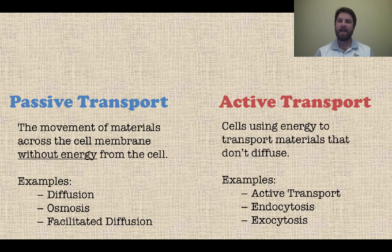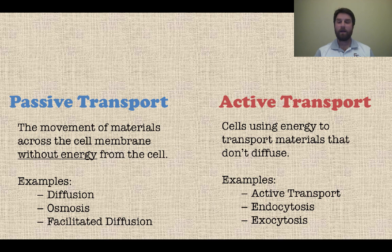Now on the other hand, active transport is when cells use energy to transport materials that don't diffuse normally. So you need a little bit of energy in order to make that happen. Active transport, endocytosis, and exocytosis are your examples that we are going to look at today.